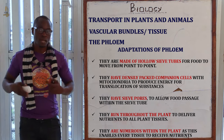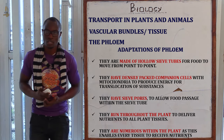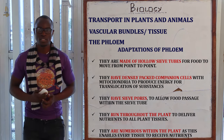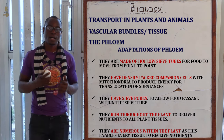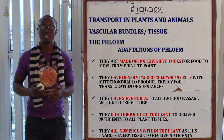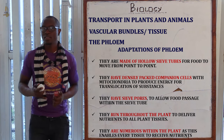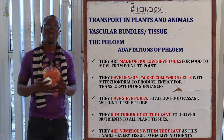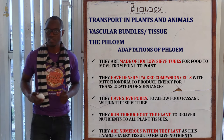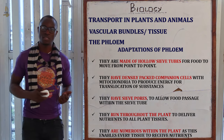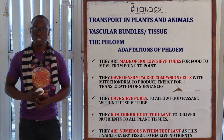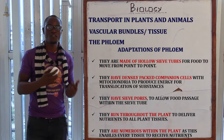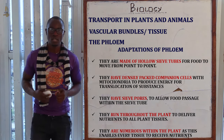Adaptations of the phloem to its function: they have hollow tubes for food to move from point to point. They are composed of living cells. They have densely packed companion cells with mitochondria to provide enough energy for active transport of materials within the phloem. They also have sieve pores to allow easier food movement from one side to the other.